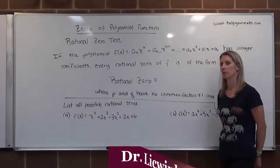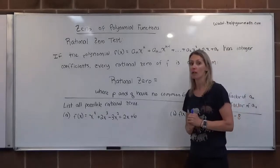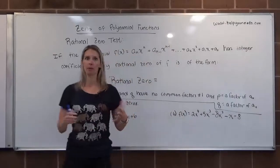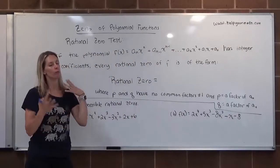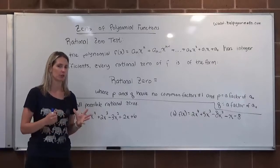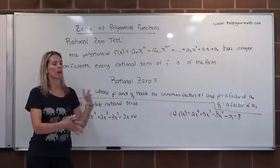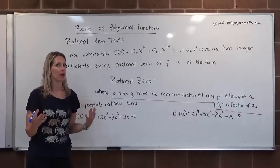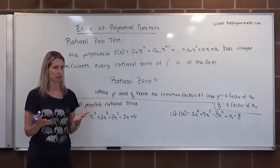We're going to need to know what that is in order to understand this definition. A rational number is any number, any real number, that can be written in the form, we generally say P over Q, where P and Q are both integers. Another kind of more common way to think about a rational number is it's any fraction or decimal or integer.